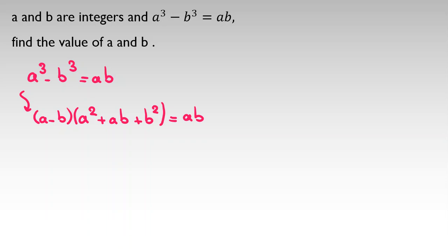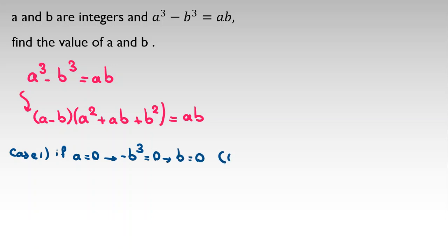I consider some different cases. In case 1, I consider ab equal to 0. For example, if a equals 0, then we can say negative b cubed equals 0, so b equals 0. So one answer is (0, 0) — both of them are 0.